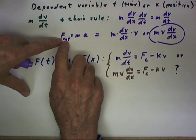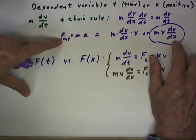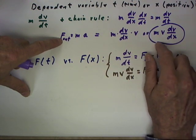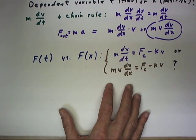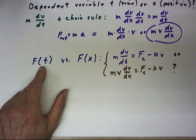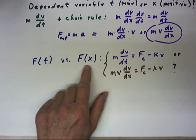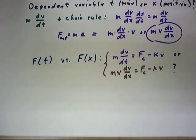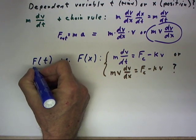If our net force is known as a function of position rather than as a function of time, then this is a very handy tool we can use. So we consider the advantages of considering F as a function of t versus F as a function of x. And we might say that's F net.